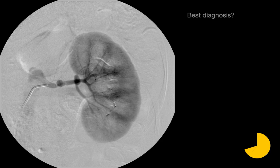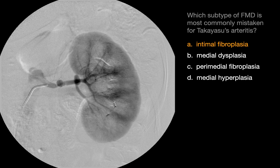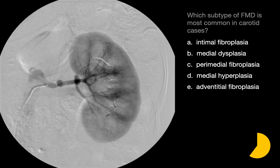The best diagnosis in this case is fibromuscular dysplasia. The subtype of FMD most commonly mistaken for Takayasu's arteritis is intimal fibroplasia, which can result in smooth focal stenosis or long tubular stenosis, the latter of which can mimic Takayasu's. Medial fibroplasia, on the other hand, usually presents with multiple stenoses that appear as a string of beads. The subtype of FMD most common in carotid cases is medial dysplasia, a subtype of medial fibroplasia, which accounts for 80% of renal cases and most carotid cases.